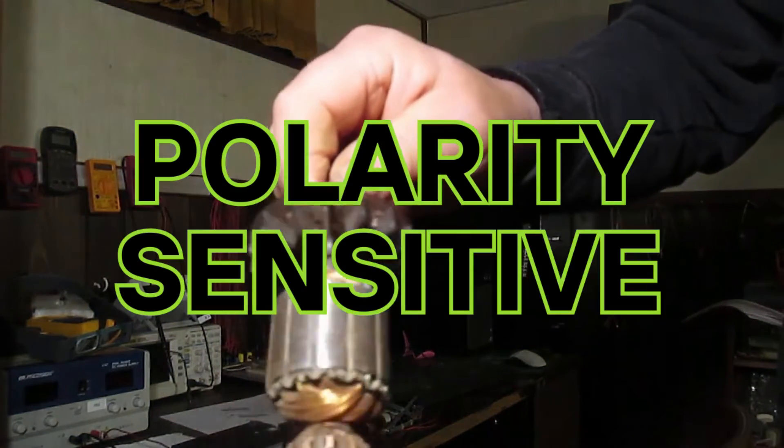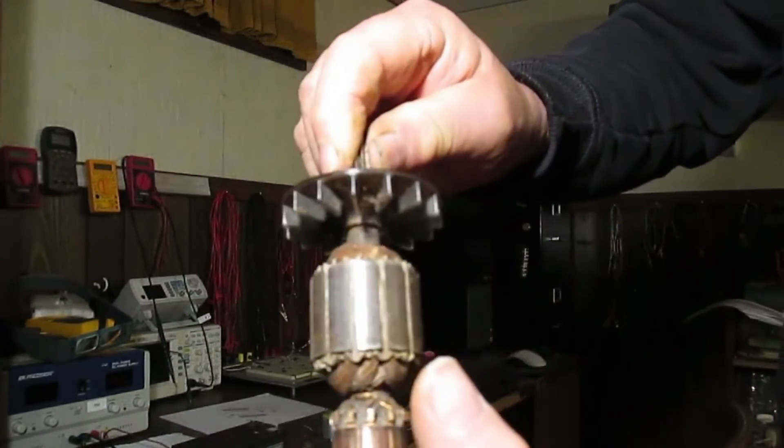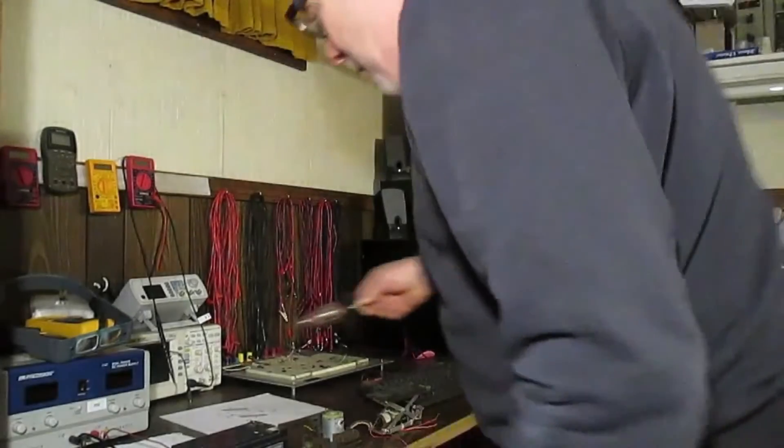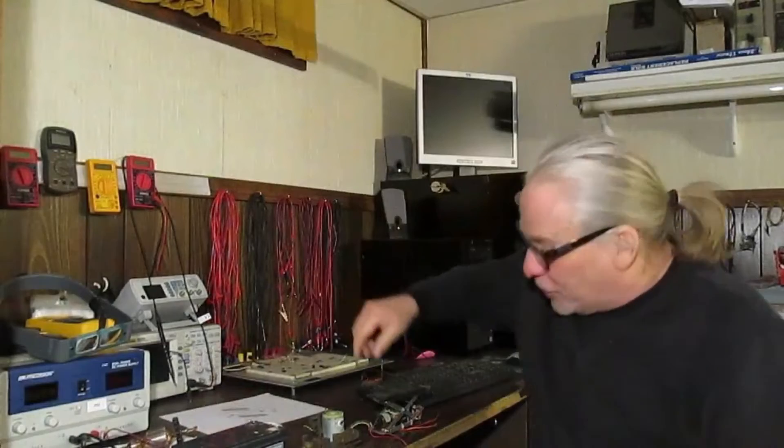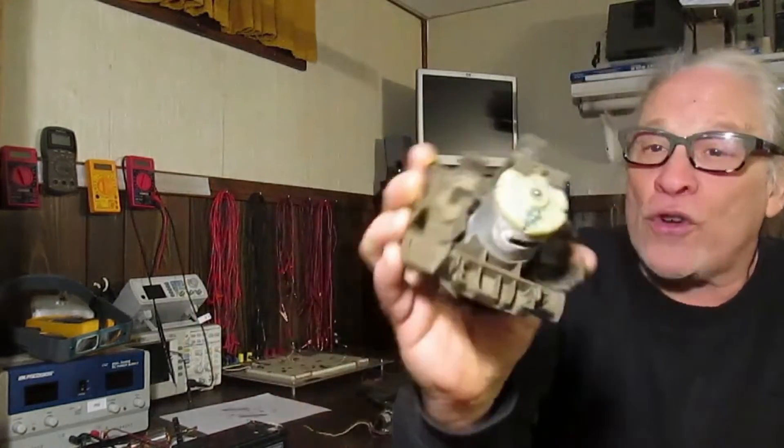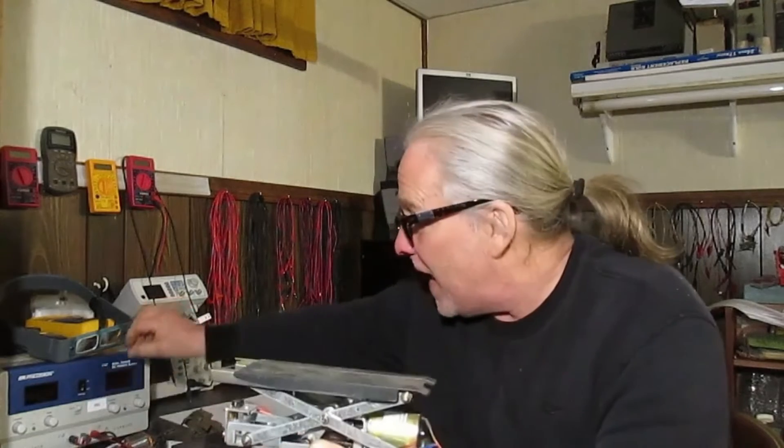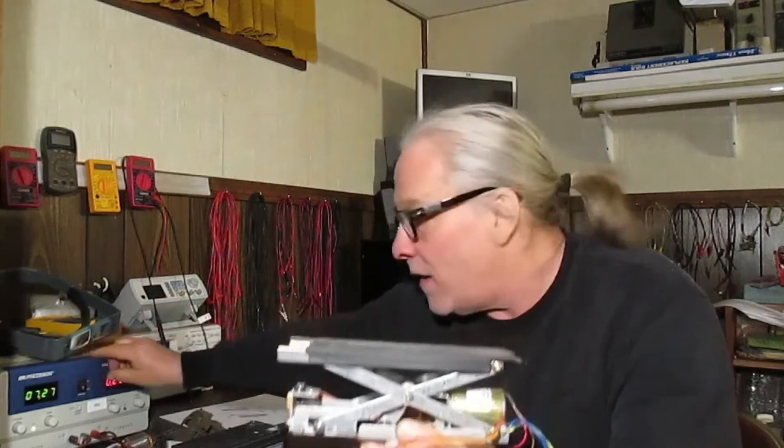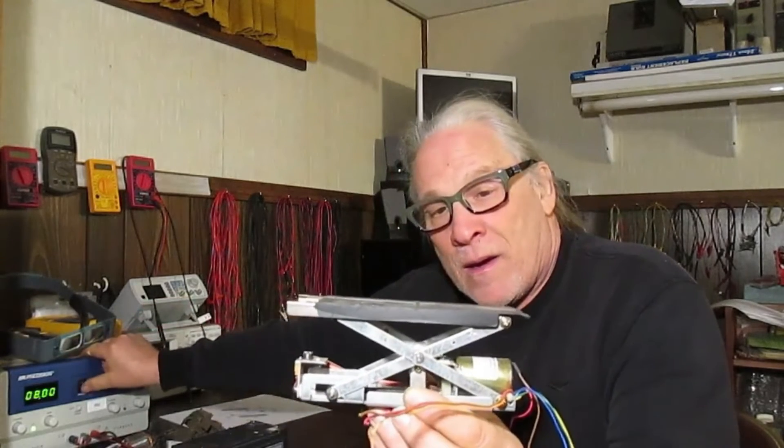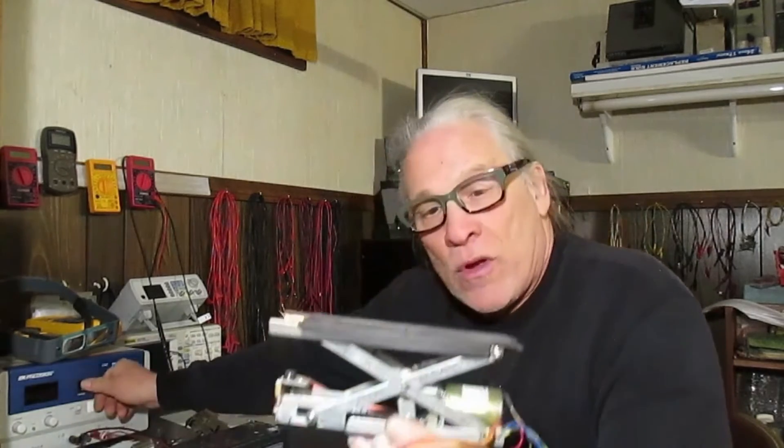DC motors are polarity sensitive. When you reverse the polarity, you reverse the direction. The simplest types of motors we're all familiar with are hobby and toy motors. They can be used to create mechanical motion - I'm reversing the polarity now and it will go the other way. I'll reverse the polarity once again and it will go the other way.